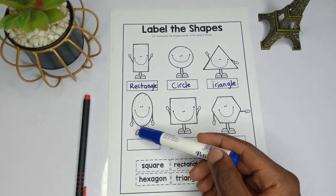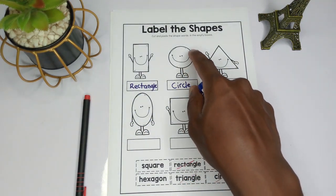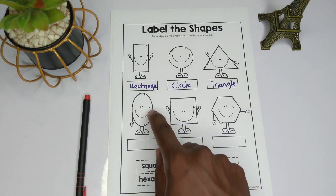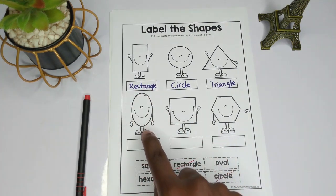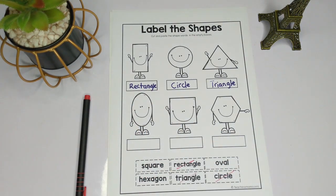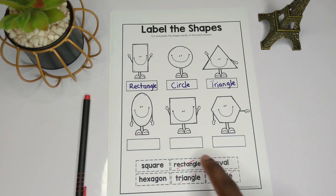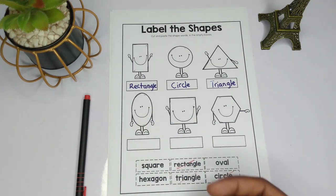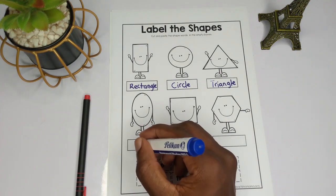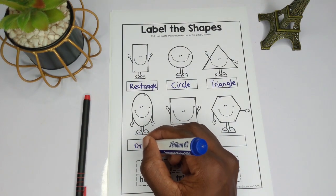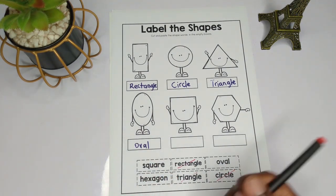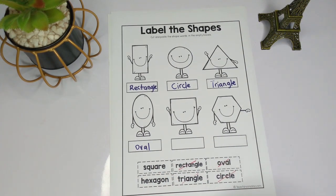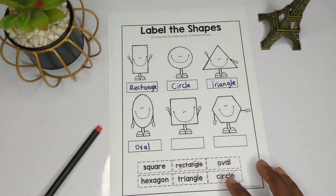This shape also looks like a circle but it is not a perfect circle — it is a little bit elongated. It goes in the form of an egg. This shape is what we call an oval. So we write the name over here: oval.